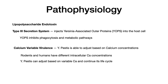Yersinia also demonstrates calcium variable virulence. This bacteria adjusts depending on the calcium concentration in the host around it. Humans and rodents have varying degrees of intracellular calcium concentrations. When Yersinia gets transmitted into a host cell, it can adapt to the variable calcium concentration. Memorize the endotoxin, the type 3 secretion system injecting the YAPs, and calcium variable virulence.